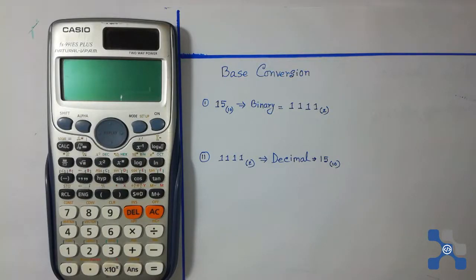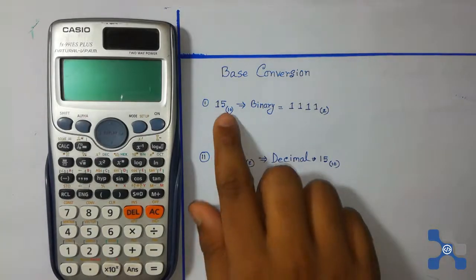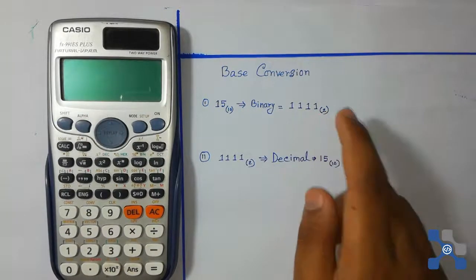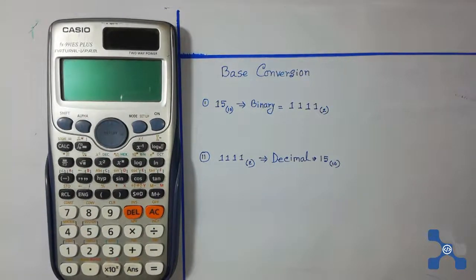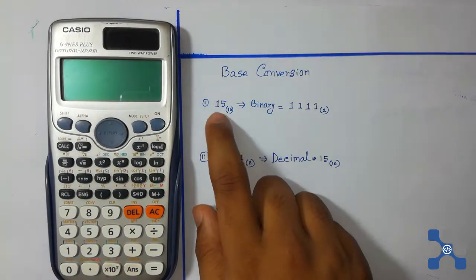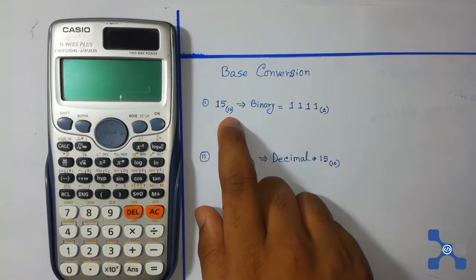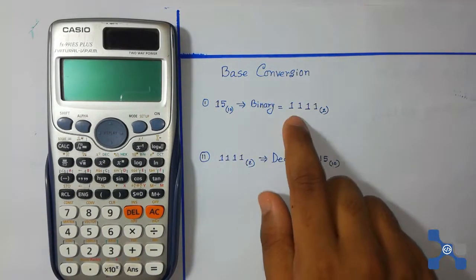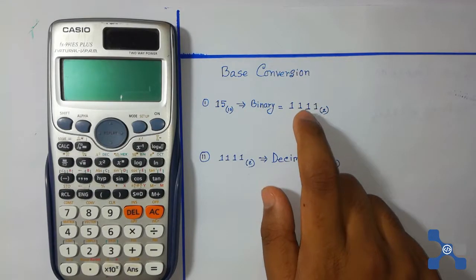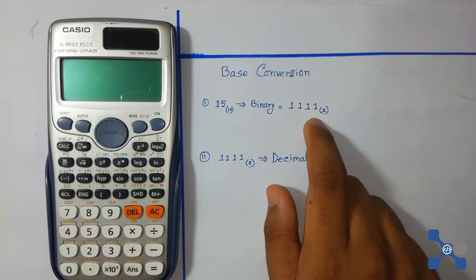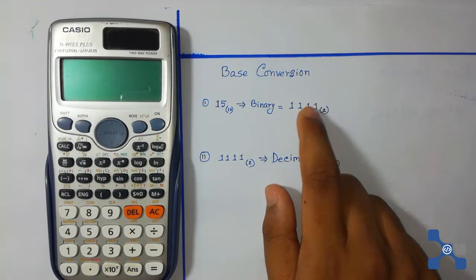In this video I am going to show you base conversion using a calculator, like decimal to binary or binary to decimal. Here is 15 in decimal, and this is also 15 but in binary — that means the binary numbering system.